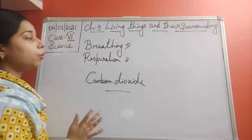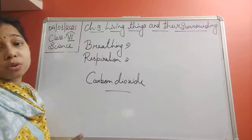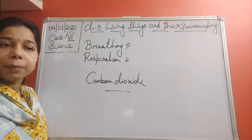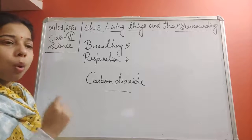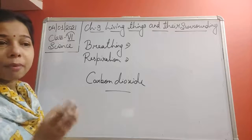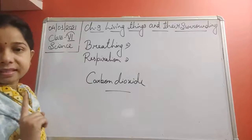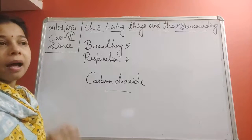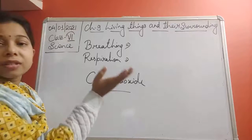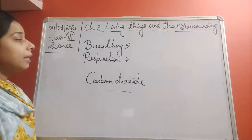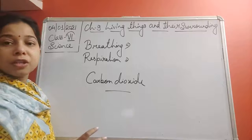We have discussed what happens in human beings and other animals. Respiration also occurs through the skin in some animals. For example, the earthworm has moist skin and all the blood vessels are present near the skin. When oxygen is taken in through the skin, it goes directly to the blood, energy is released, and carbon dioxide comes out through the skin itself.